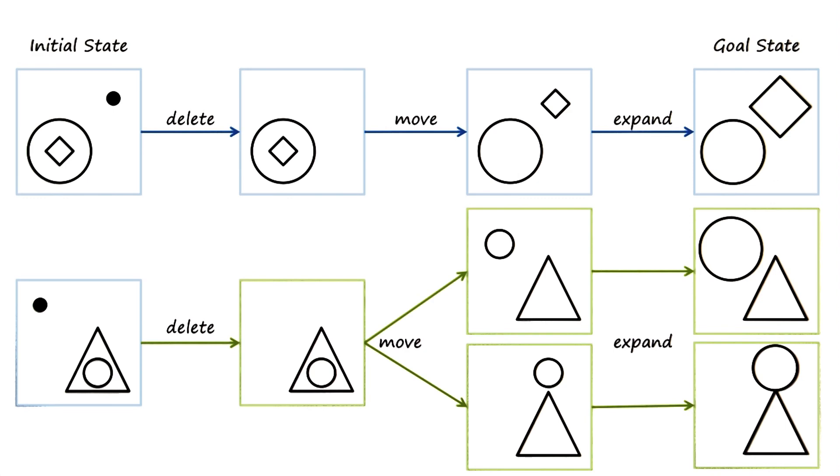Notice also that the one single knowledge representation of semantic network supports all three of these strategies. The coupling between the knowledge representation of semantic network and any of these three strategies, problem reduction, mean sense analysis, or generate and test, is weak. Later on, we'll come across methods in which knowledge and the problem solving method are closely coupled. The knowledge affords certain inferences, and inferences demand certain kinds of knowledge. This is why these methods are known as weak methods. Because the coupling between these universal methods and the knowledge representation is weak.